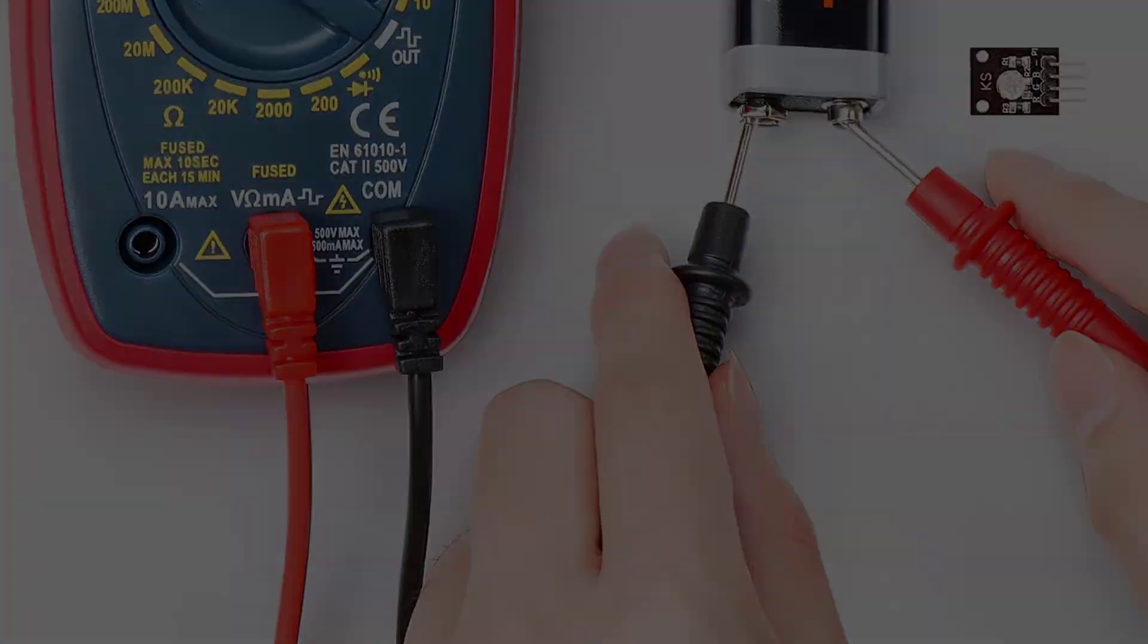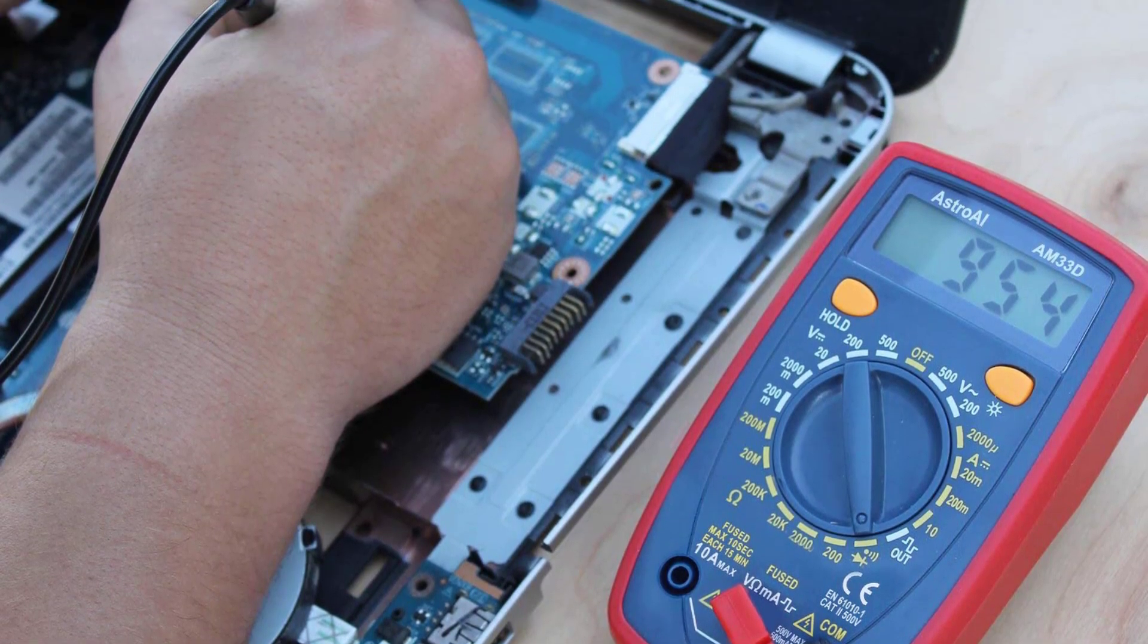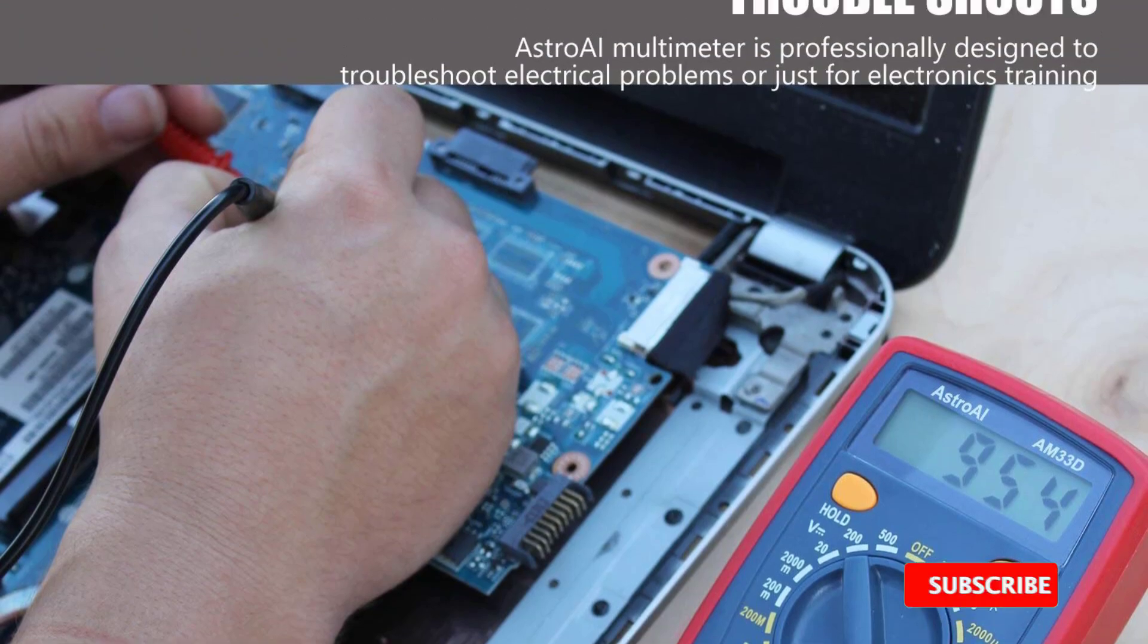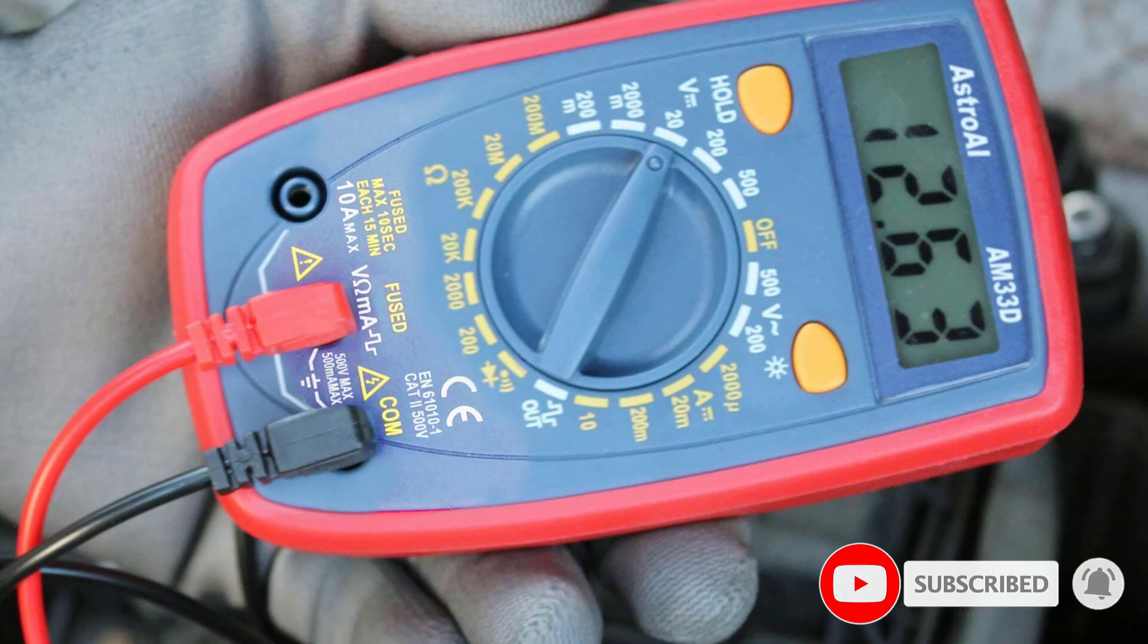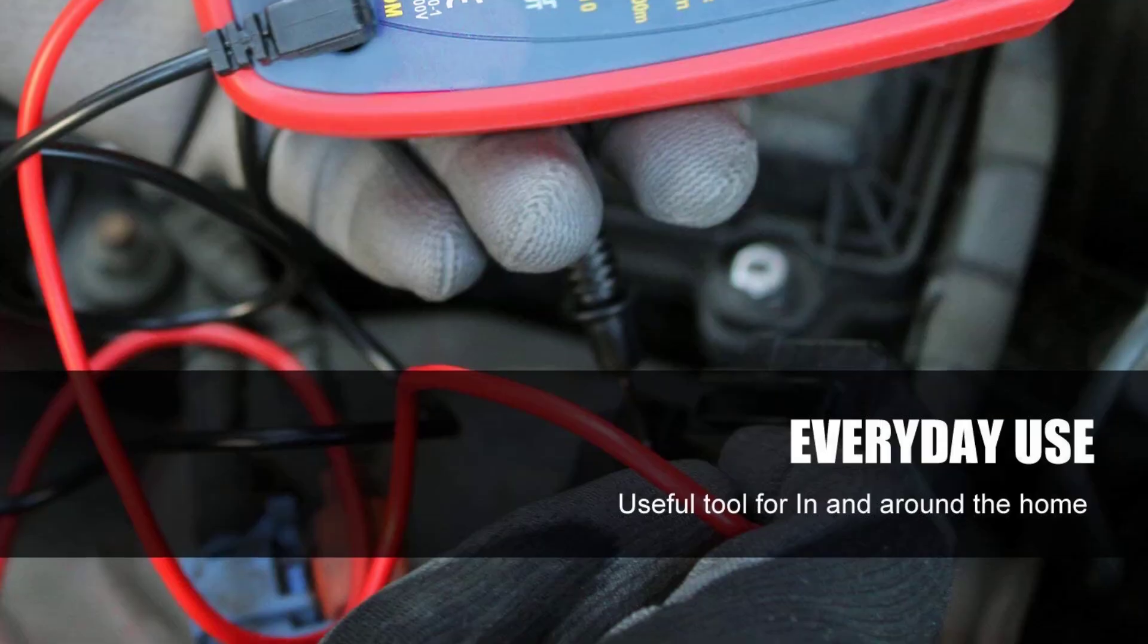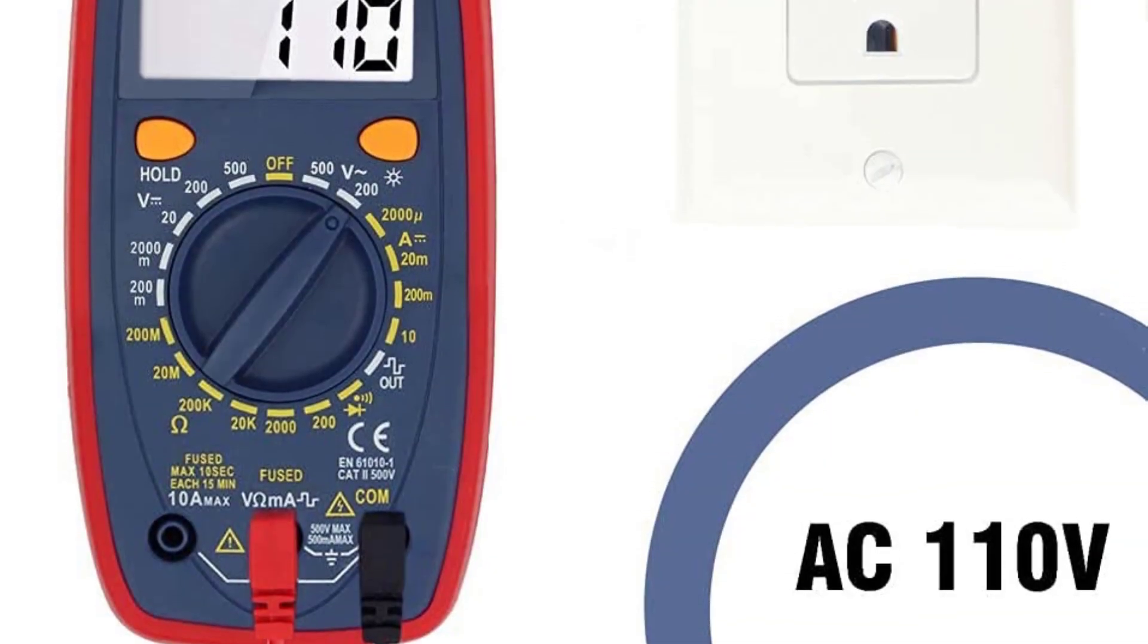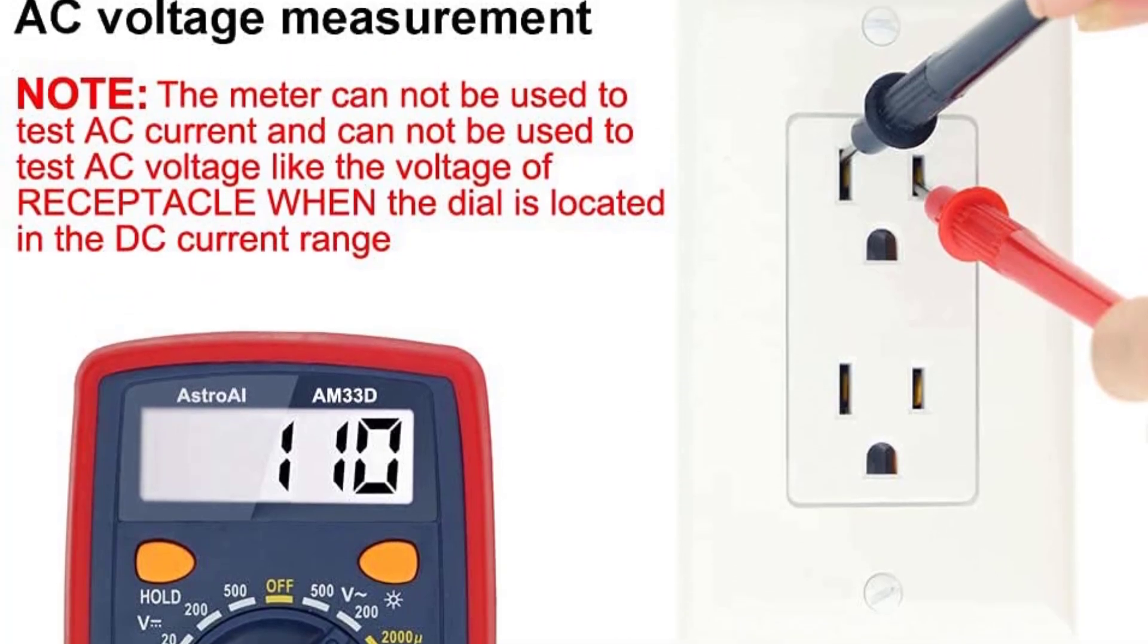This simple multimeter can help with troubleshooting AC and DC circuits and has the crucial audible continuity check to help you track down a broken wire or loose connection. It includes a set of simple probes and has some of the basic convenience features we want in a multimeter, like an integrated backlight and a data hold function. It also features a square wave generator, though that's a feature most people likely won't use much.